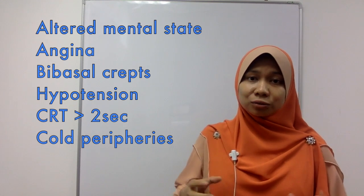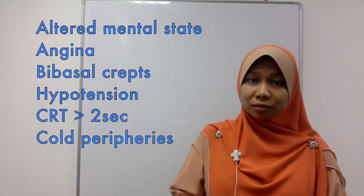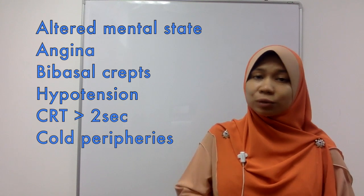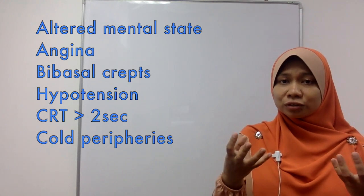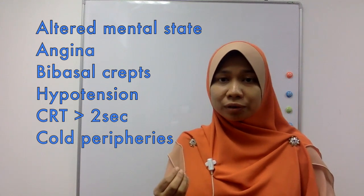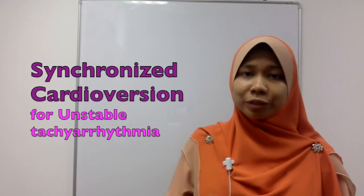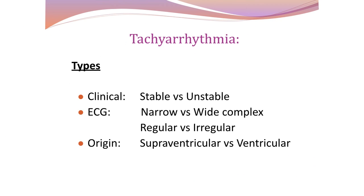We examine the lungs for bibasilar crackles as a sign of heart failure, monitor blood pressure for hypotension, and check the peripheries for signs of shock such as reduced capillary refill and cold clammy skin. If the patient is in shock due to arrhythmia, we classify this as unstable tachyarrhythmia. The treatment for unstable tachyarrhythmia is synchronized cardioversion — we give the patient electrical therapy.